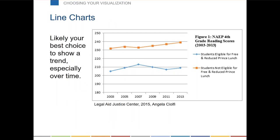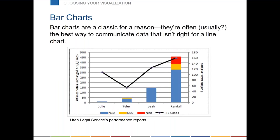Here we've got another stacked bar from Utah Legal Services — an internal report showing the timeliness of their staff in entering case outcomes reports. Names have been changed to protect the guilty. You can see things like Randall has way more slightly overdue, really overdue, and really really overdue cases than everybody else. It also has a line on it which doesn't work — these people are not ordered, there's no inherent order between Julie, Tyler, Leah, and Randall — so this line is not actually doing anything. It's a case in which there probably shouldn't be a line.